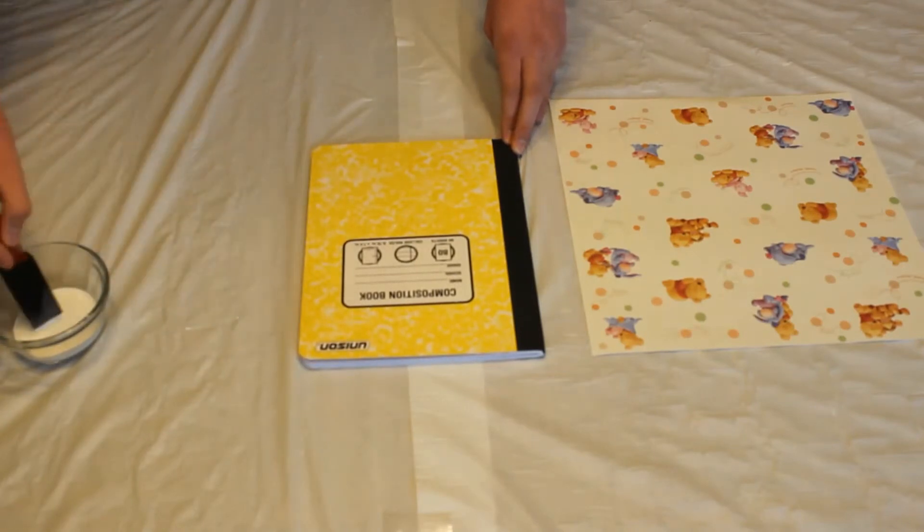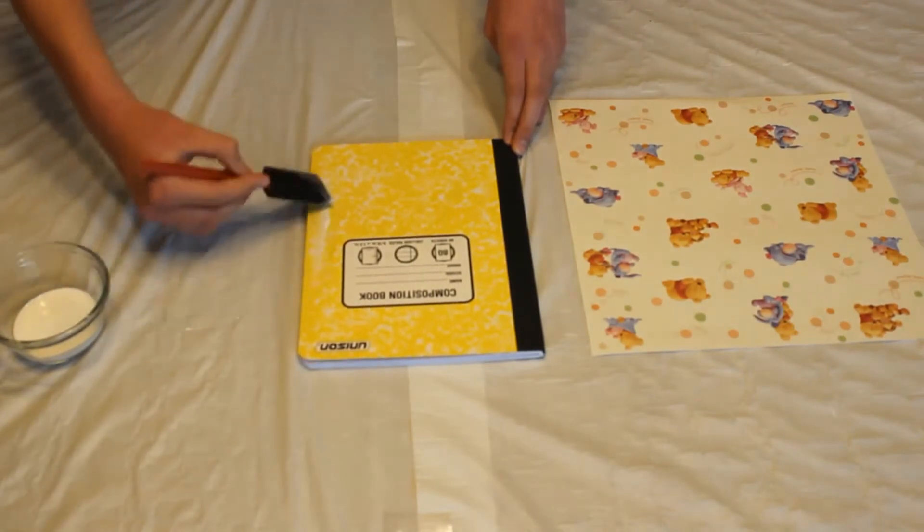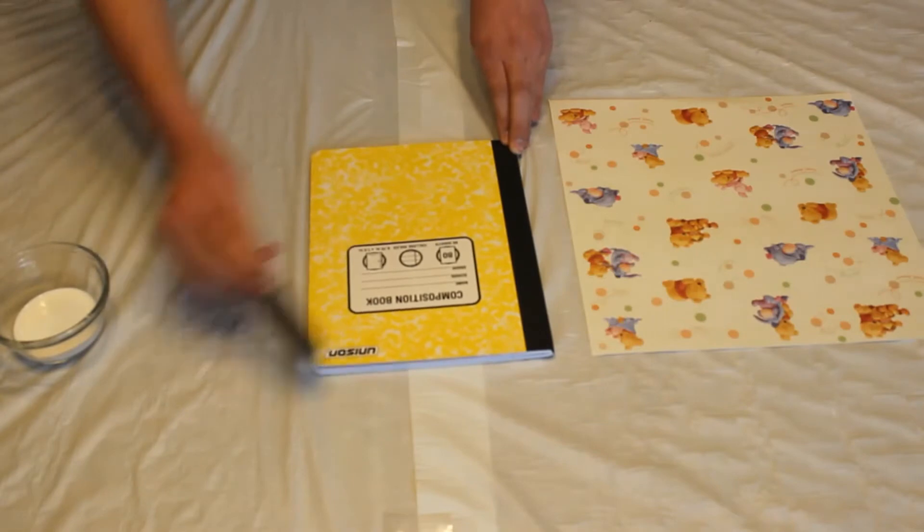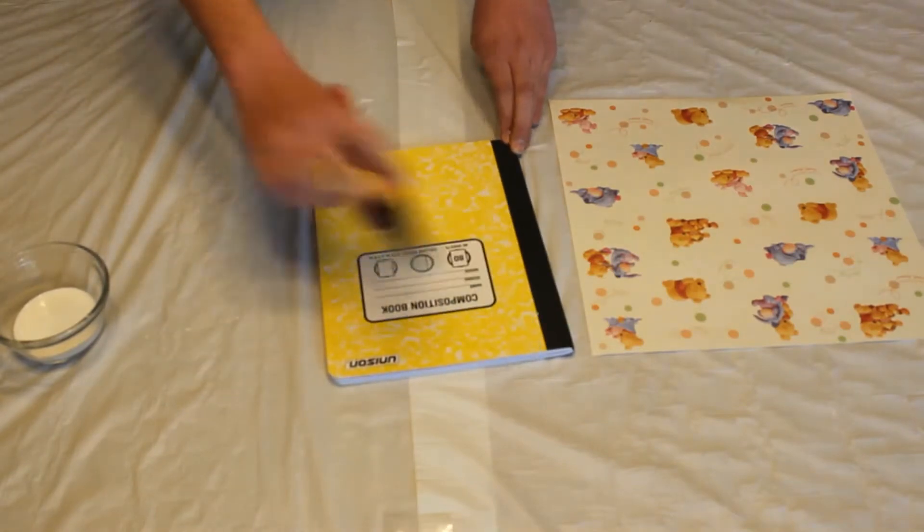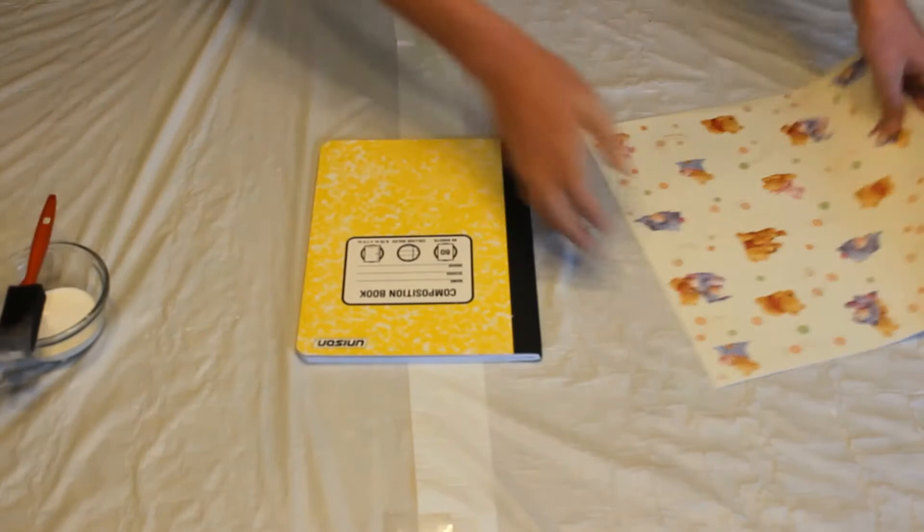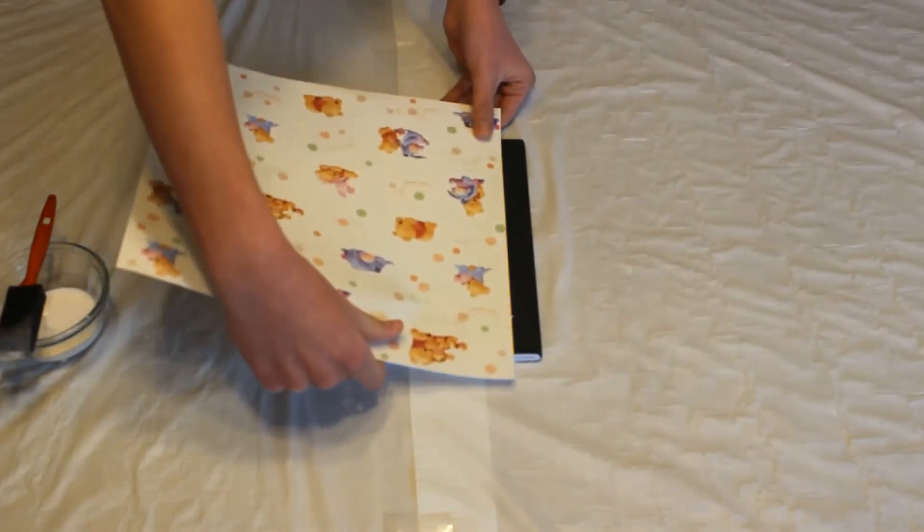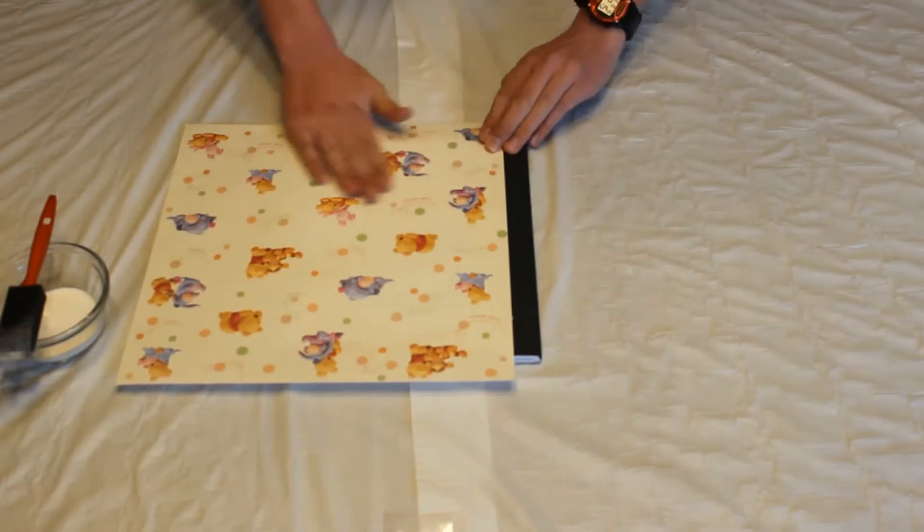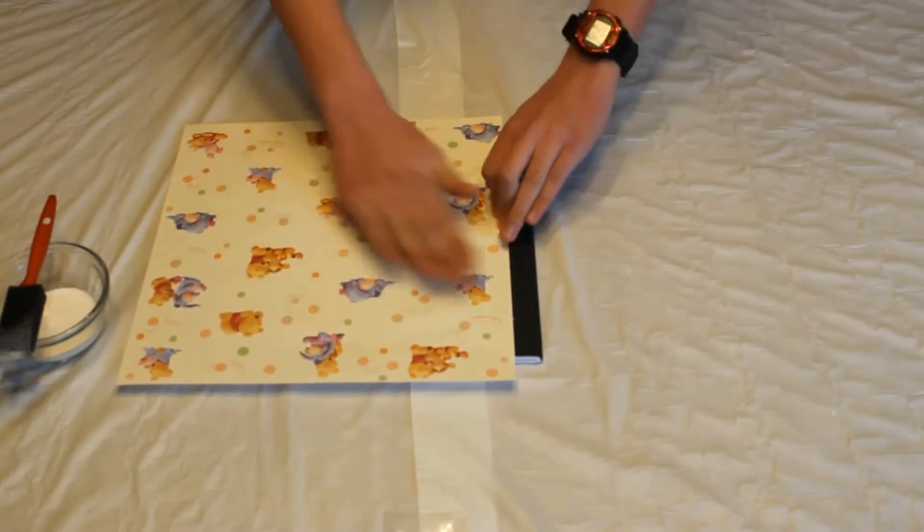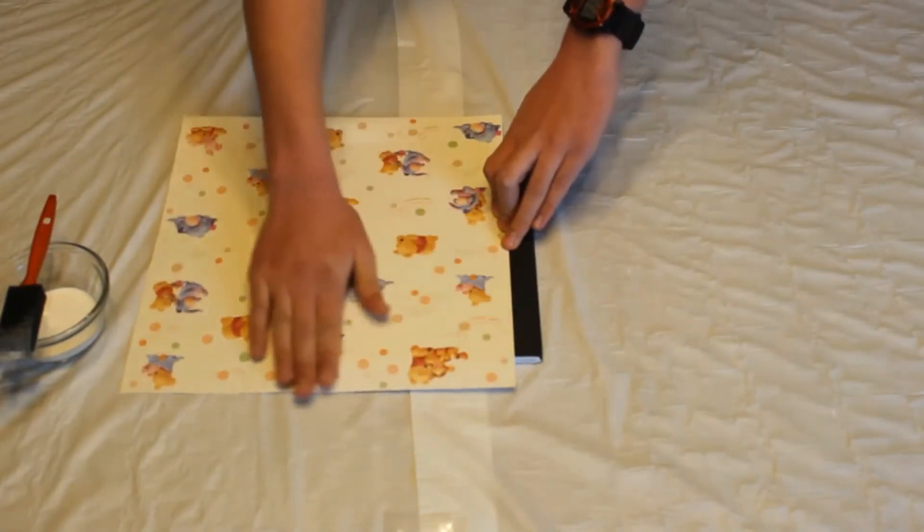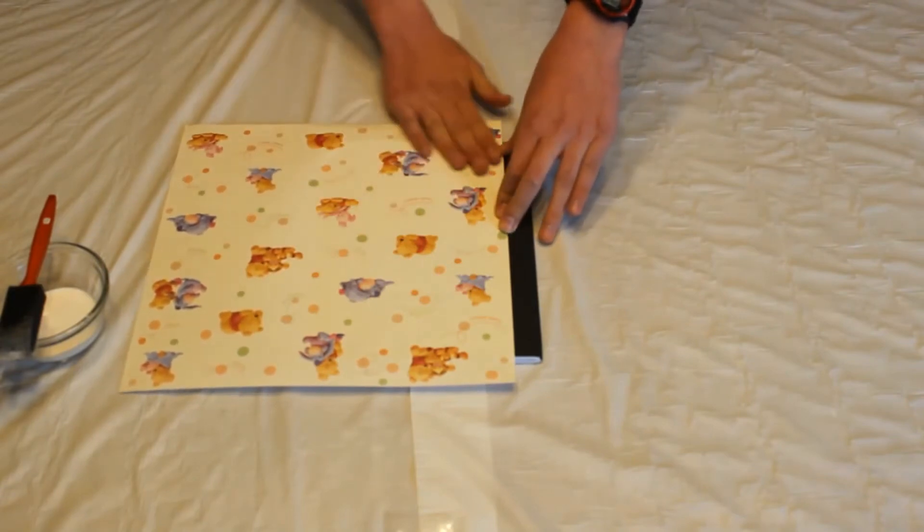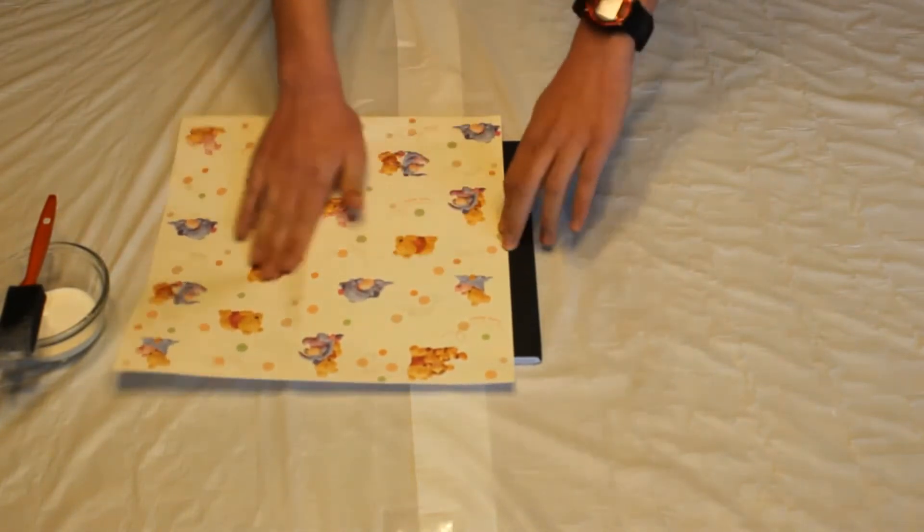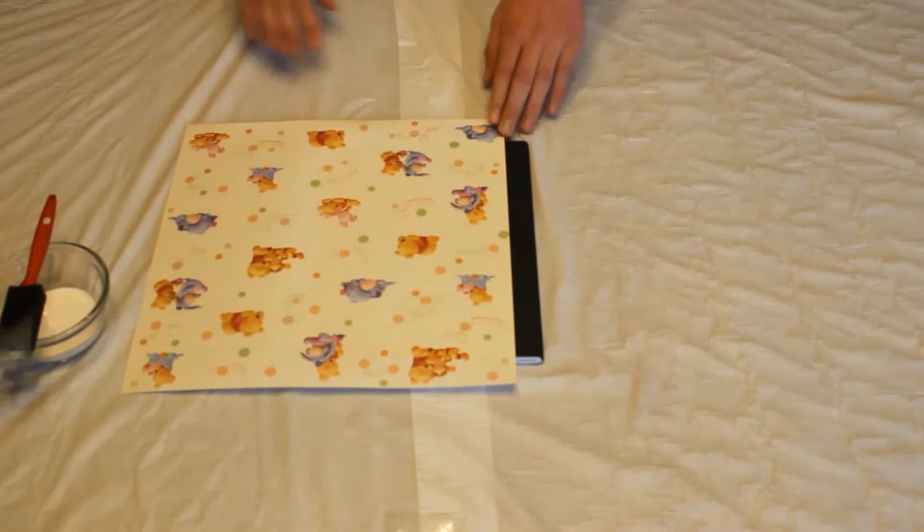Then you'll need to get all the sides as well. Once you're done, take your paper, wind it up right here, and press it down. Try not to get any wrinkles, so evenly press it out. And there you go.